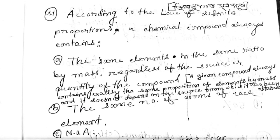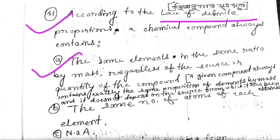According to the law of definite proportions, a chemical compound always contains exactly the same proportion of elements by mass, and it does not depend on the source from which it has been obtained. This means the ratio of elements in the compound would always be the same.